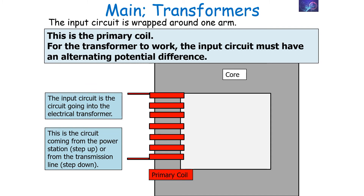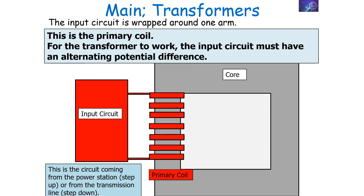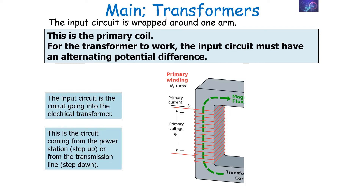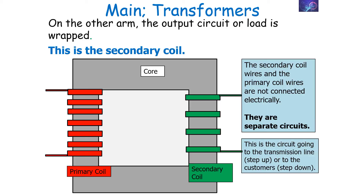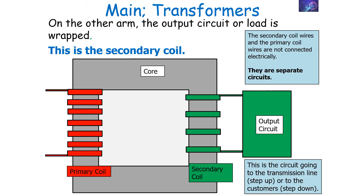For the transformer to work, the input circuit connected to the primary coil must have an alternating potential difference. The primary coil is connected to the input circuit, which has an alternating potential difference. You then have a secondary coil on the other side of the transformer. It's important to know that the secondary coil and the primary coil wires are not electrically connected — they are separate circuits. The secondary coil is connected to the output circuit, also called the load circuit in physics.